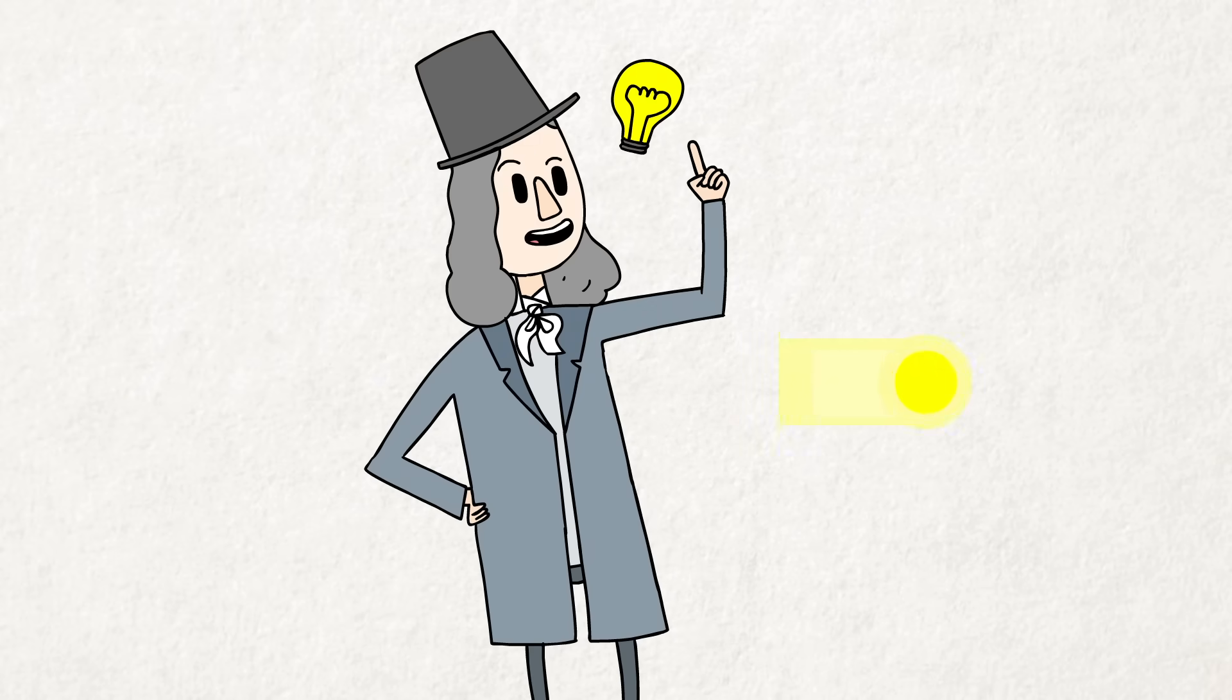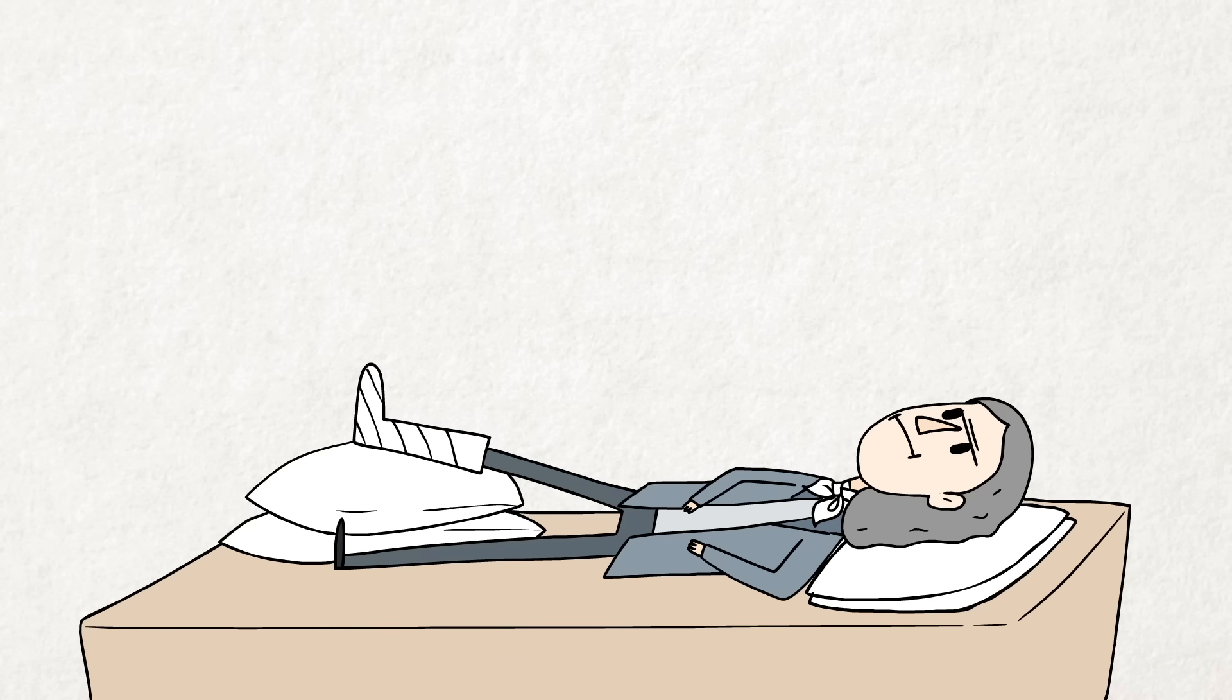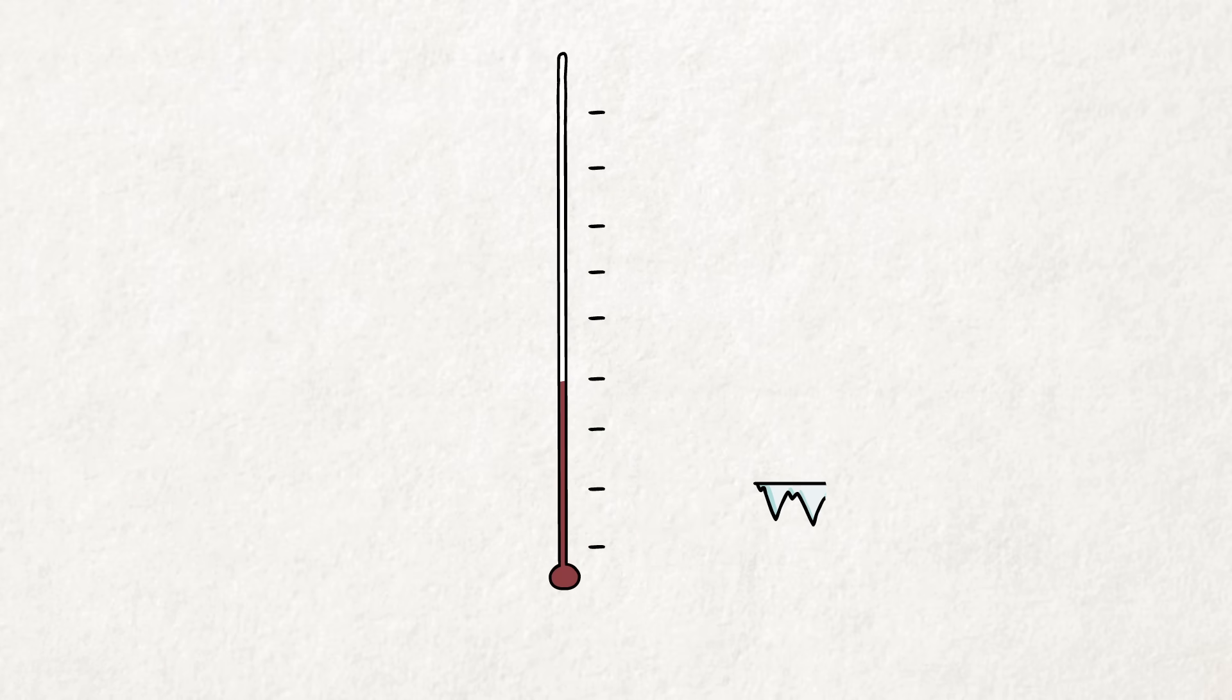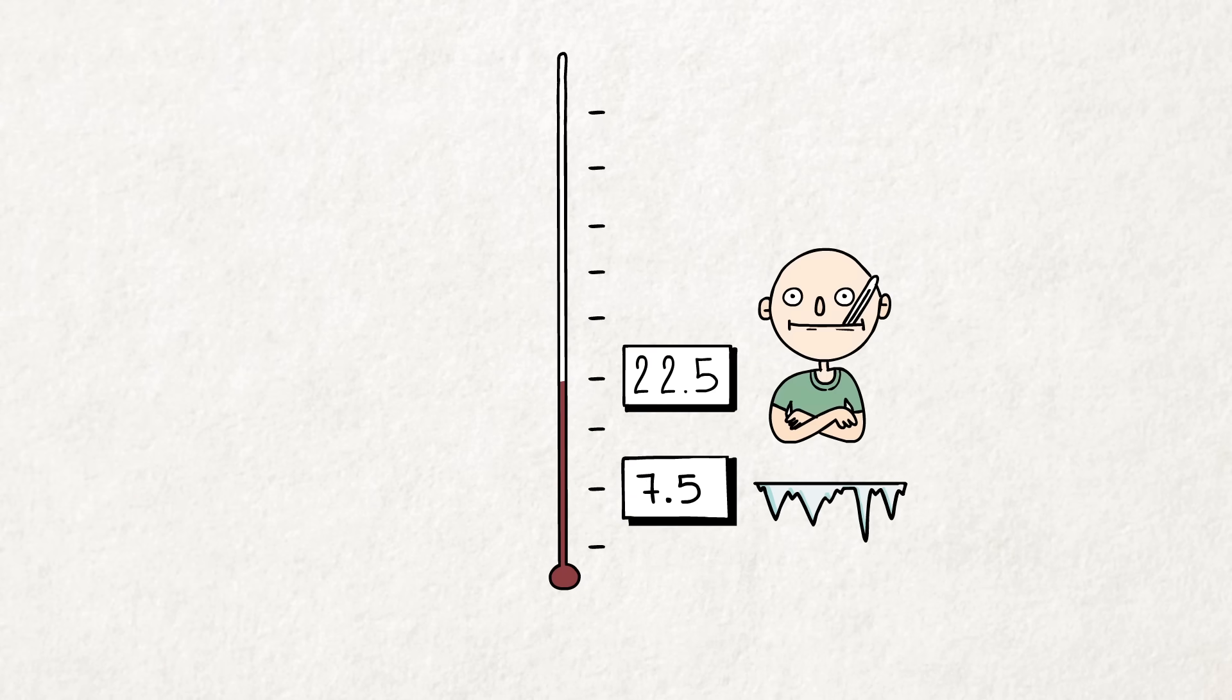But more pertinent to this story, in 1702, Romer was housebound after breaking his leg. And to pass the time, he devised a brand new temperature scale, with the freezing point of water at 7.5 degrees and body temperature at 22.5 degrees.